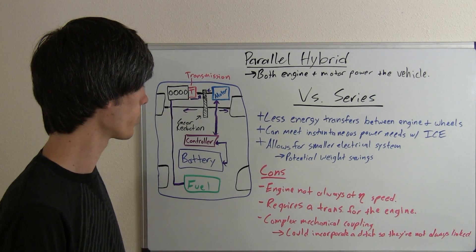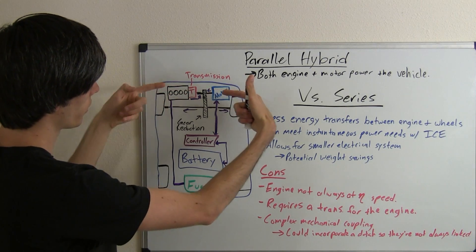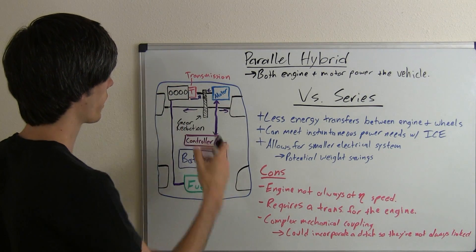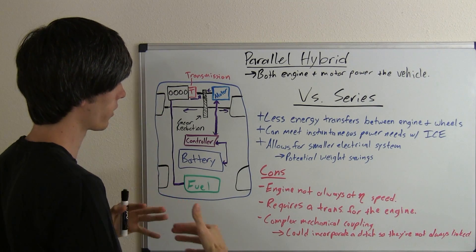And then it's a complex mechanical coupling because you've got these two power sources linking together at one point. You have to think about that—you can't have one traveling faster than the other obviously or the other is going to be trying to slow it down.